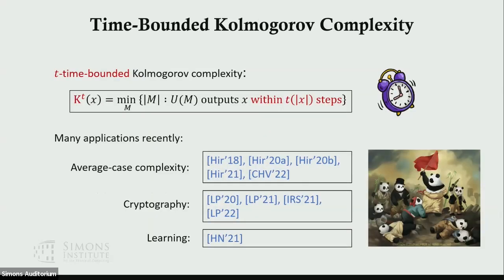The universal Turing machine is fixed in advance and there's no restriction on how long the program will run. So we can define a time-bounded version of Kolmogorov complexity. First we fix time-bound T, and then the T time-bounded Kolmogorov complexity is the minimum length of a program that can recover x within T steps.